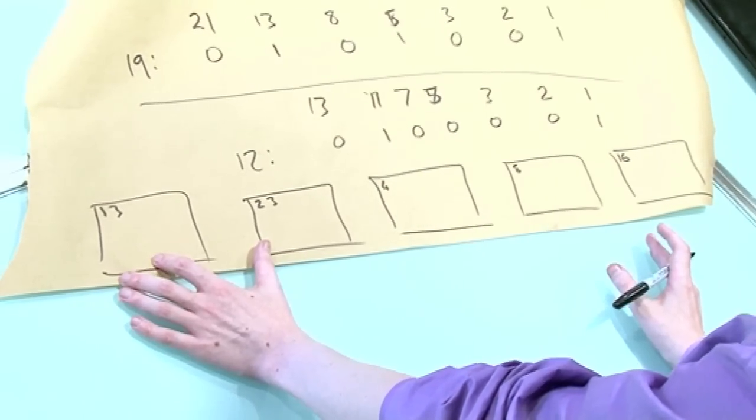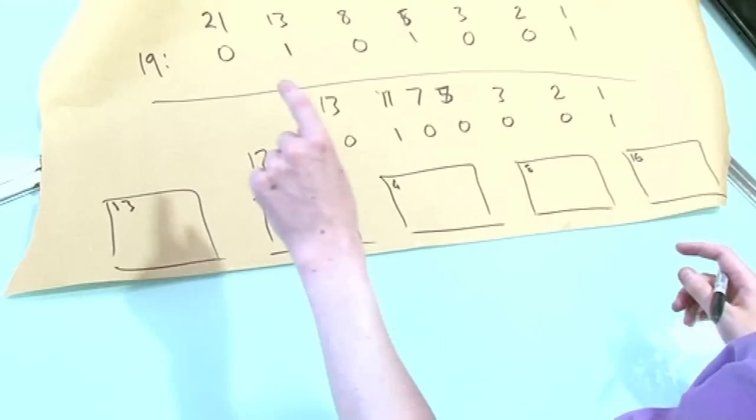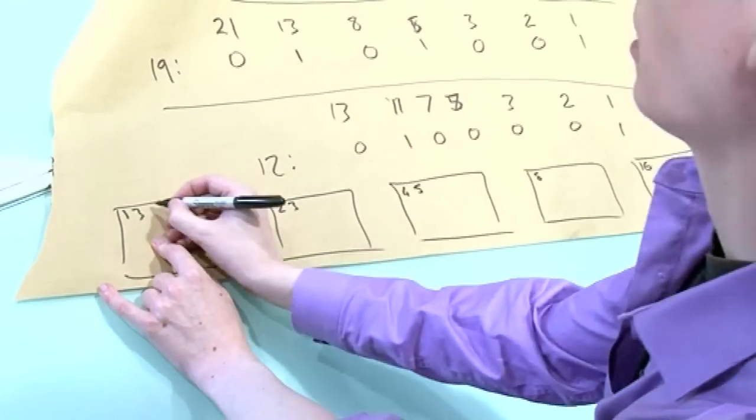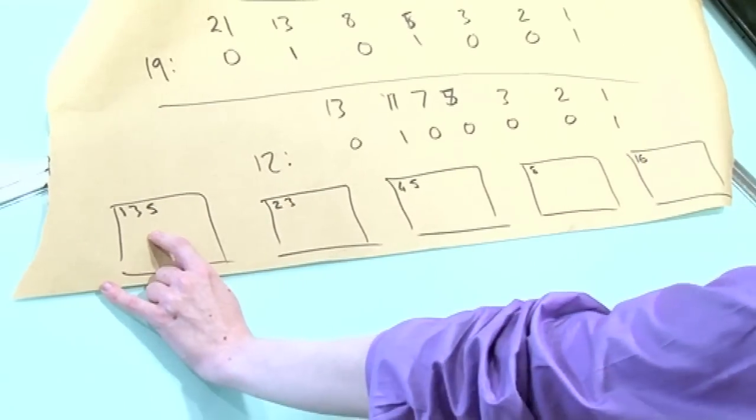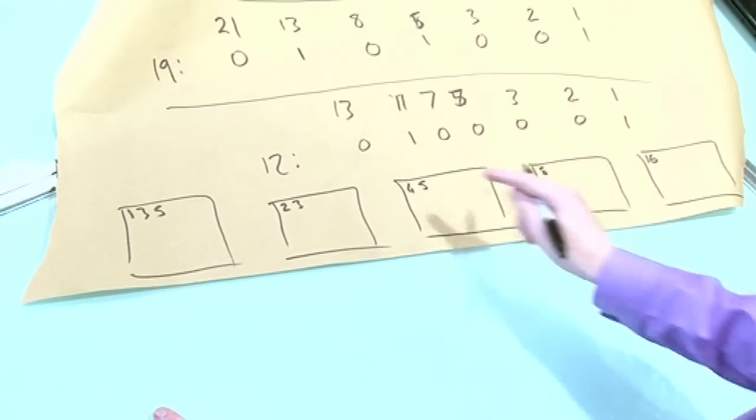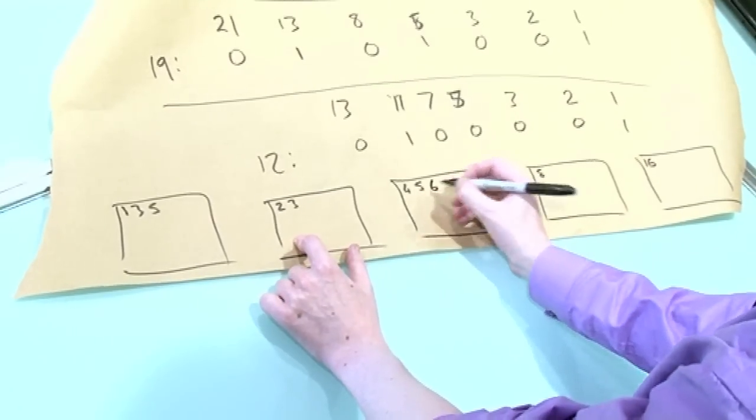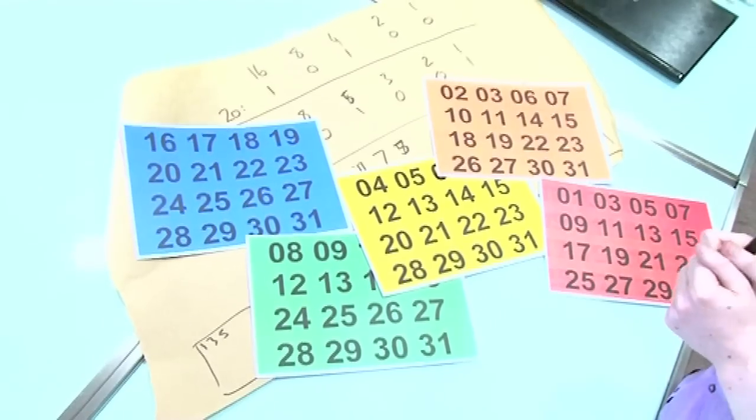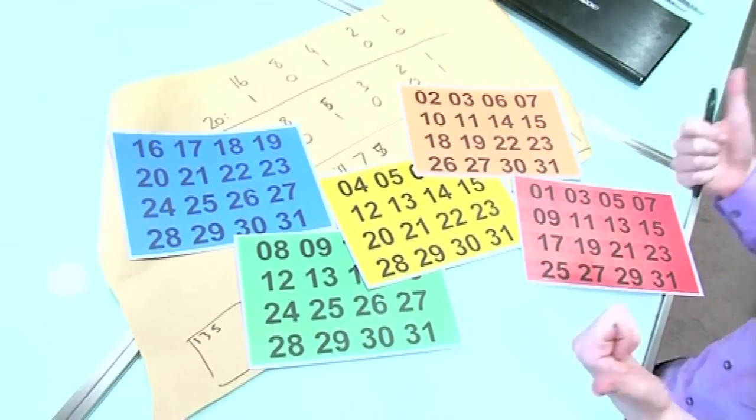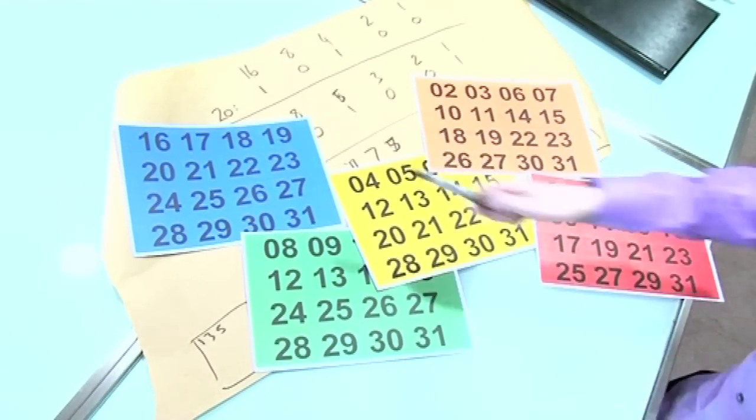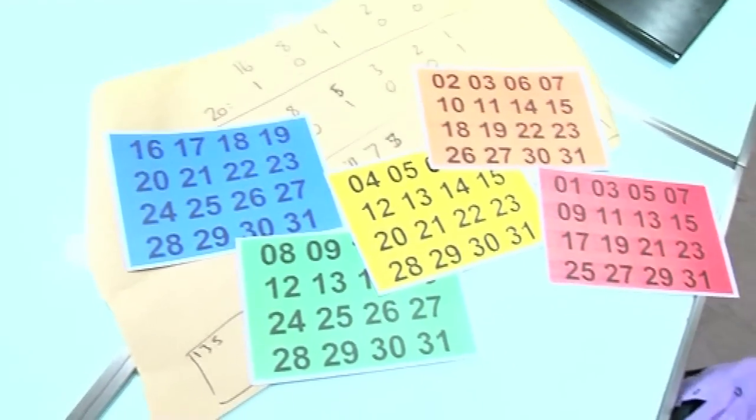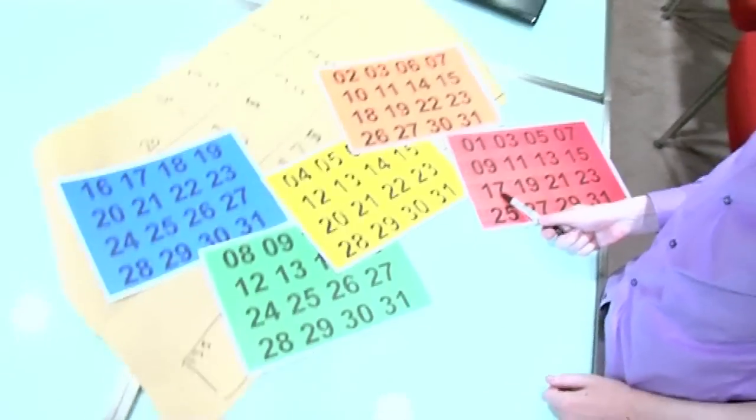5. Well, how do I make 5? 1 and 4? So I have to write the 5 on the 1 and the 4 card. Then the 6, well, it's 4 and 2. So I have to write the 6 here and here. So let's go back to Brady's 17. As we know that 17 is, well, think about the powers of 2. 16 plus 1 would do it. And that's why I wrote 17 here on the 16 card, and I wrote 17 here on the 1 card. That's how I made them.